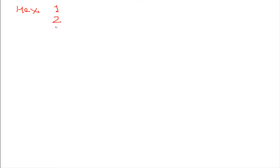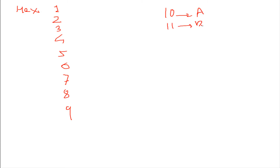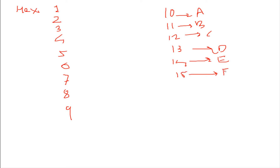In the hexadecimal system we have digits 1 to 9, same as decimal. From 10 onwards: 10 becomes A, 11 becomes B, 12 is C, 13 is D, 14 is E, 15 is F. These are the basics of the hexadecimal system.